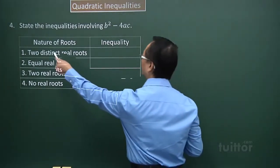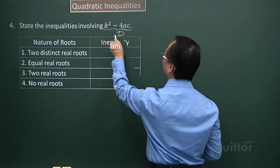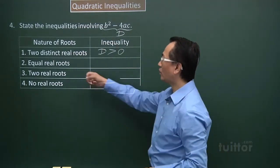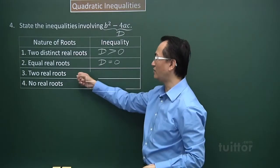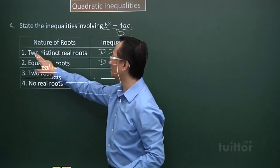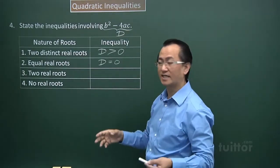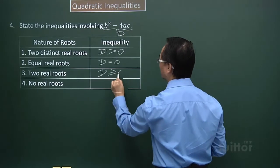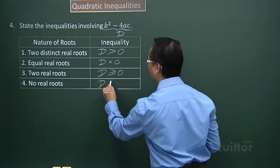For two distinct real roots, if we call the discriminant d, then d must be greater than 0. For equal real roots, d equals 0. If the question states simply two real roots, that encompasses both cases above, so d is greater than or equal to 0. Note that equal real roots means there are two roots that are the same value. For the last case — no real roots — the discriminant will be less than 0.